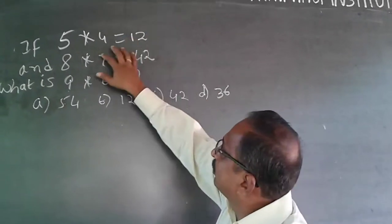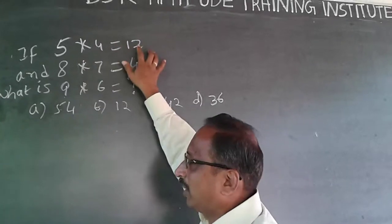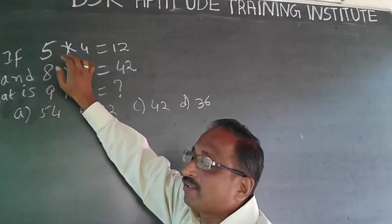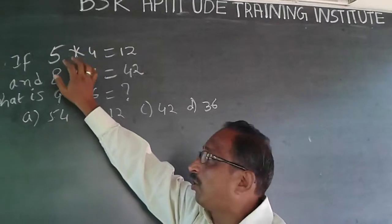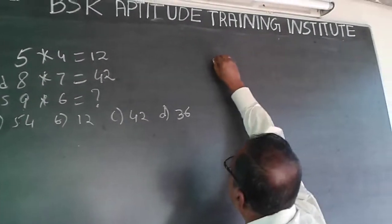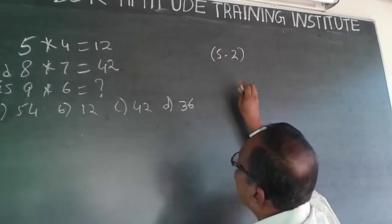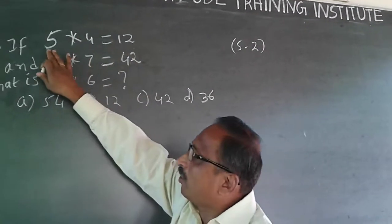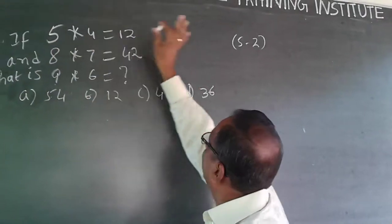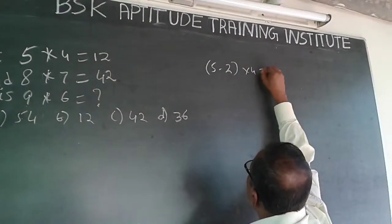Here, you can go with 12 and 4. What happens is, 5 into 4 is given as 12. So 12 divided by 4 is 3, meaning 5 is becoming 3. How can 5 become 3? It's a pattern — 5 minus 2 will become 3, and then into 4 will be equal to 12.